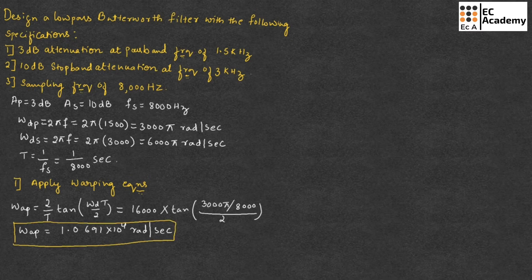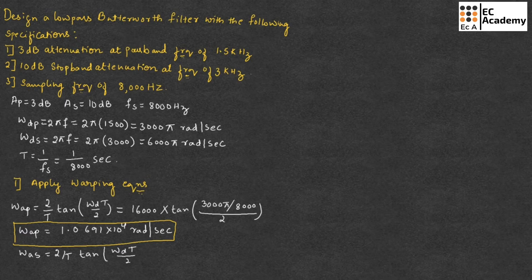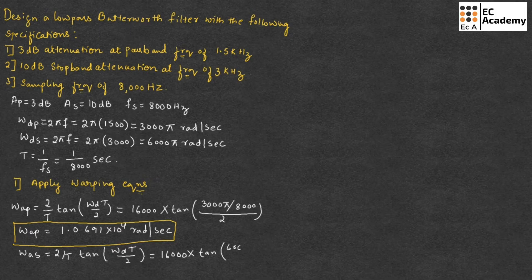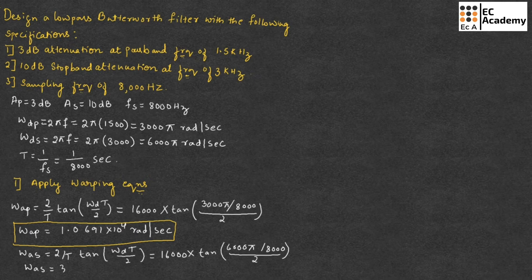In the same way, let us calculate for the stopband. That can be given as Omega_dS equals 2/T * tan(Omega_dS * T / 2). Substituting the values, it will be 16000 into tan of 6000*pi divided by 8000, whole divided by 2. Solving this, we get Omega_dS equal to 3.8627 × 10^4 radians per second.